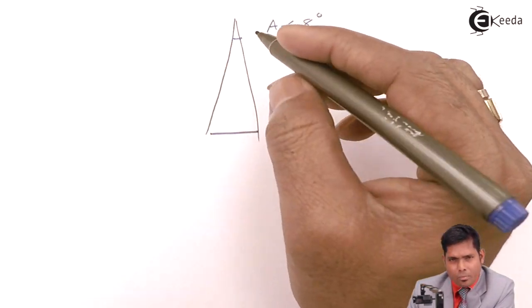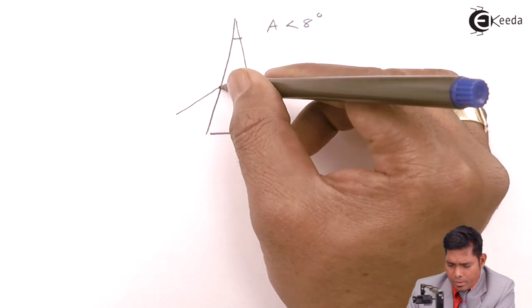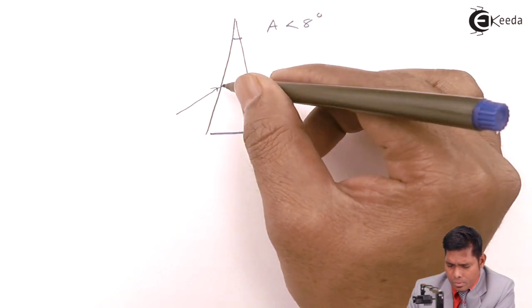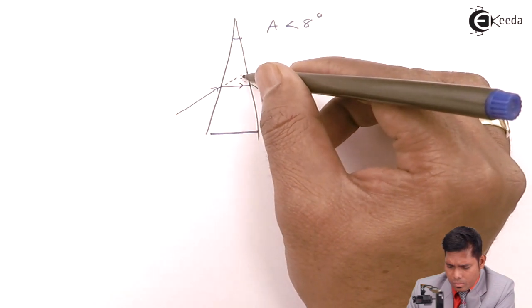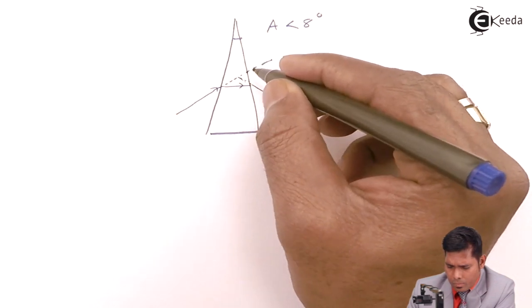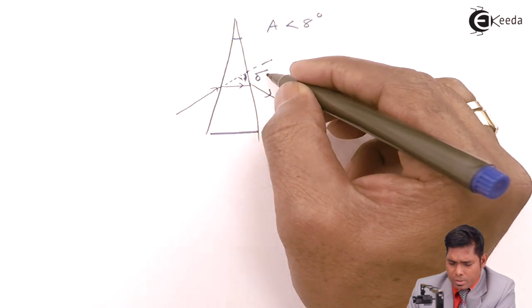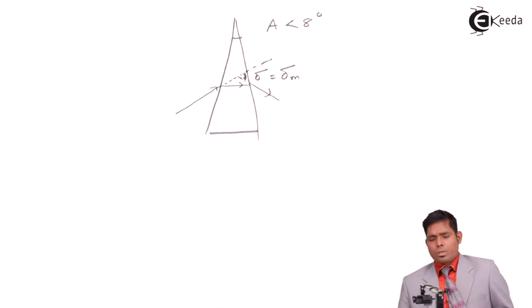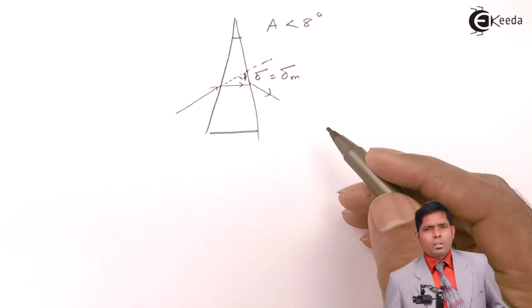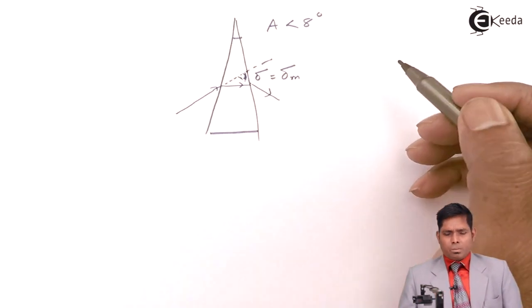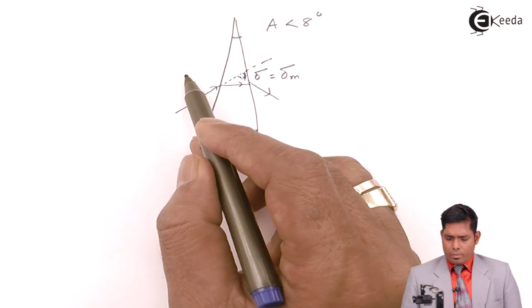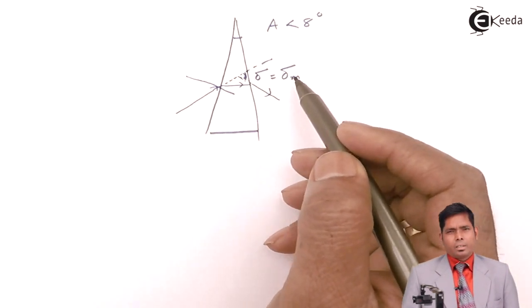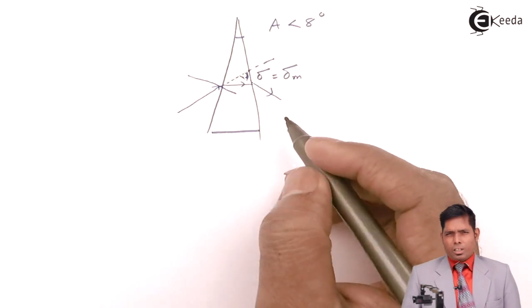In that case, the incident ray always has a deviation that is always minimum. For a thin prism, the angle of deviation is always minimum. Whatever angle of incidence you have, this angle or any other angle, this delta is almost the same because this is very thin.